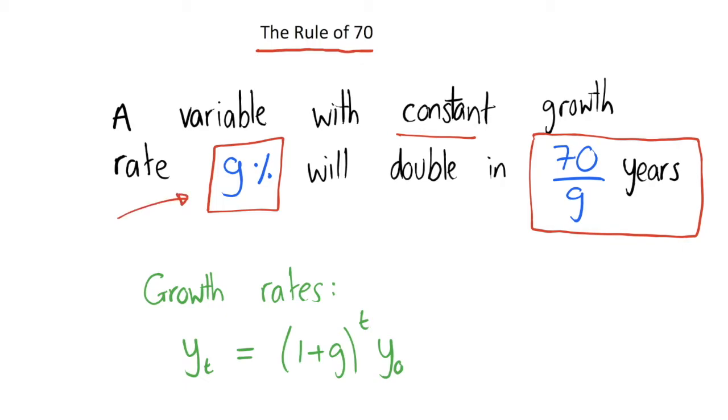So this rule says if a variable is growing 2% every year, then it's going to double after 70 over 2, or it's going to double after 35 years, which seems quite surprising that something growing at a relatively low rate of 2% every year is only going to take 35 years to double.